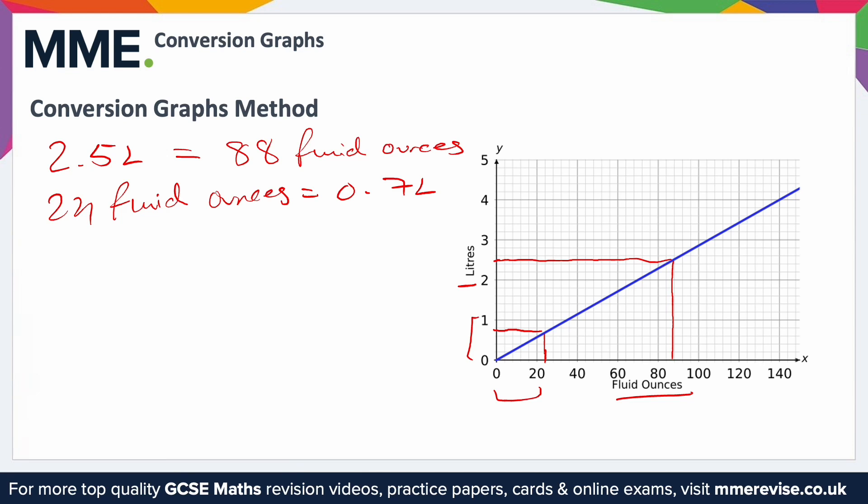You can of course use this for any value you like, even if it doesn't actually fit on the graph. For example, if we wanted to find what 12 litres was in fluid ounces, well 12 doesn't fit on the y-axis, but what we could do is find what 4 litres is, and then 12 divided by 4 is 3, so just times whatever number that is in fluid ounces by 3. So you can extrapolate it out to find different values as well.